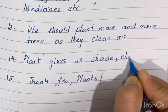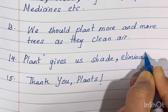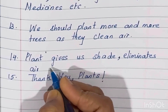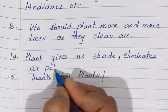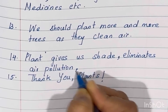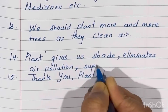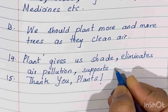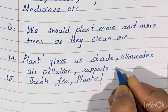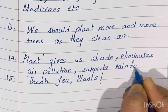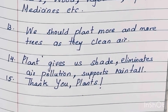Plants give us shade like trees. Big plants are known as trees. Plants also eliminate air pollution and support rainfall.